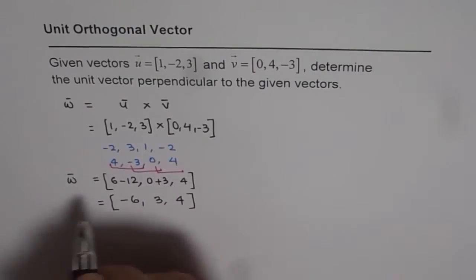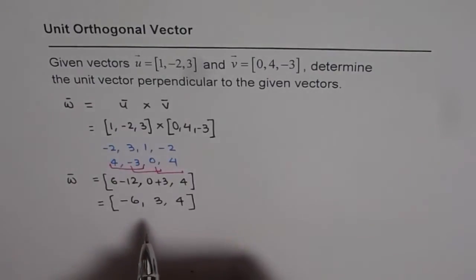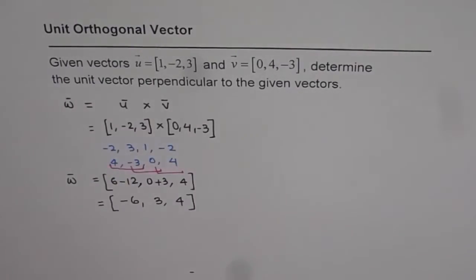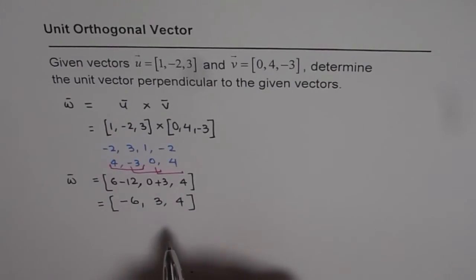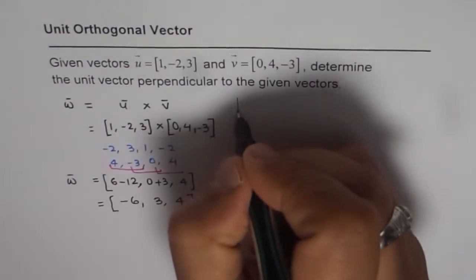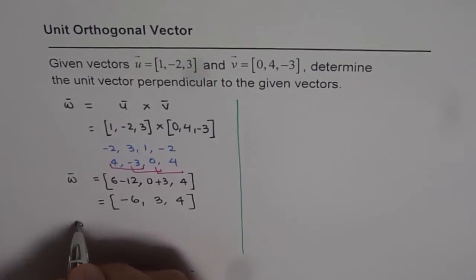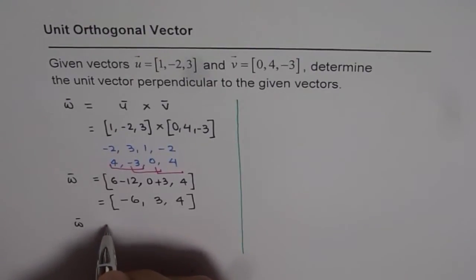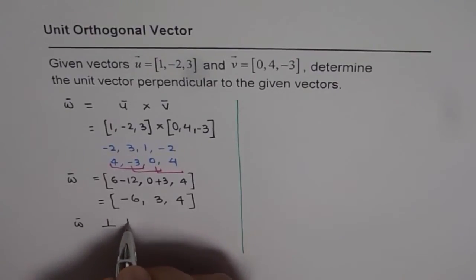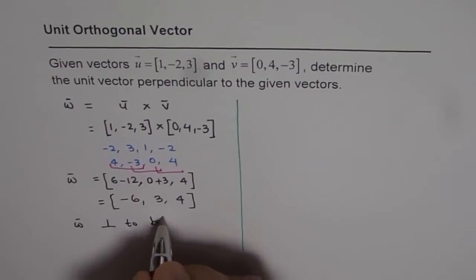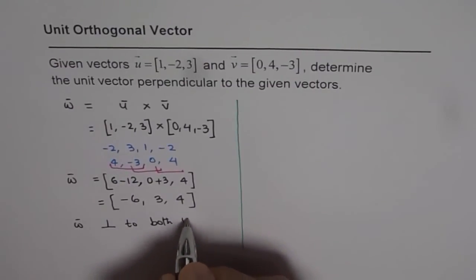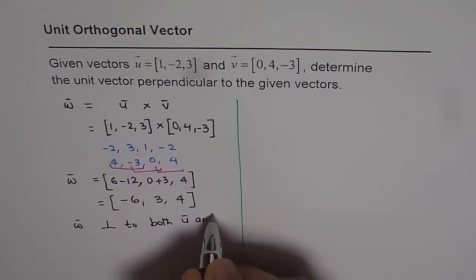Vector w equals (minus 6, 3, 4) is orthogonal to both u and v. It is not yet the unit vector perpendicular to both — it is just an orthogonal vector. So we have vector w which is perpendicular to both u and v.